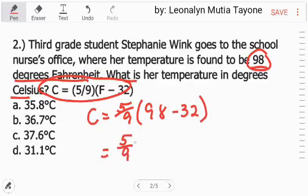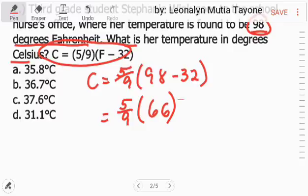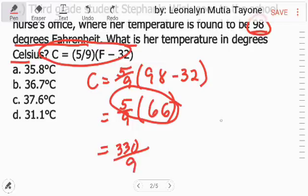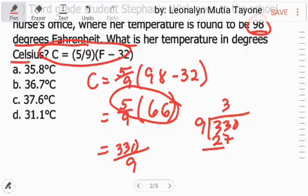So, 5 over 9, doon muna tayo sa loob ng parenthesis. 98 minus 32 and that is 66. So, 5 times 66 and that is 330 over 9. So, 330 divided by 9 and this one is 327, 660. This is 654, 6.6.